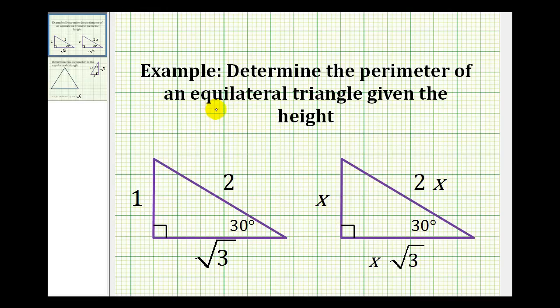In this example, we'll take a look at determining the perimeter of an equilateral triangle given the height. And we're able to do this based upon the information we know about a 30-60-90 triangle as we see here on the left.